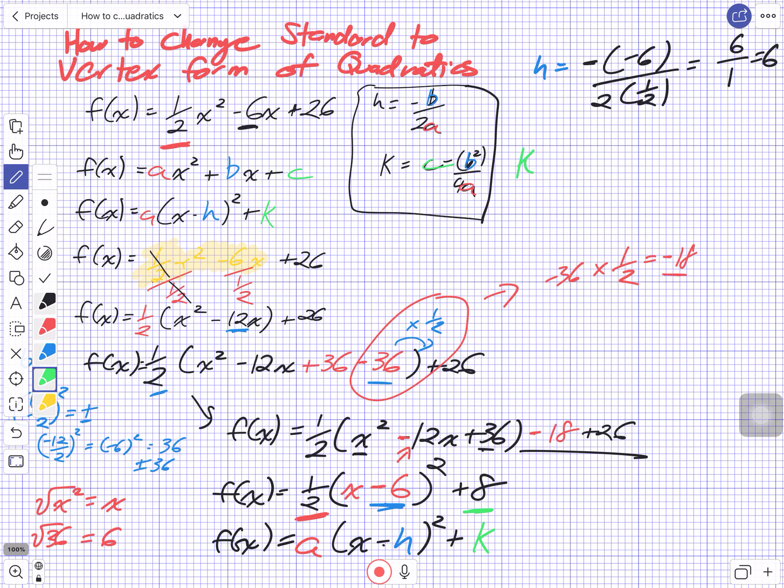And for our k to check, k is equal to our c value, which is here, is 26. Subtract. Our b was negative 6 squared divided by 4 times a was a half. So we're going to do a lot of little operations here. Negative 6 squared is 36. So I'm going to still have 26 minus 36. I'm working on the fraction right now. So it's minus 36. And then 4 times a half is 2. 36 divided by 2 we know is 18. So we have 26 minus 18. And 26 minus 18 is the value of 8. And that's what we got for our k value.